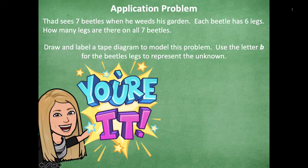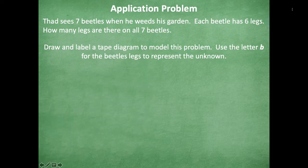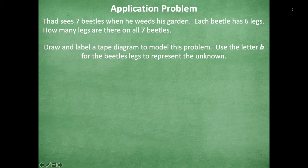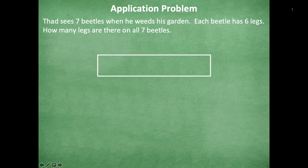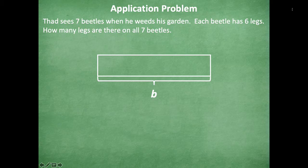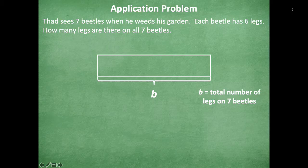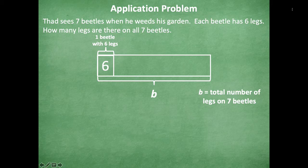All right friends, make sure you pause if you still need more time. Otherwise, here's how I solved the application problem. So I know that I'm going to use a tape diagram. I know that the total is going to be B because I don't know the total number of legs on seven beetles, so that's what the B is representing. I know that one beetle has six legs.